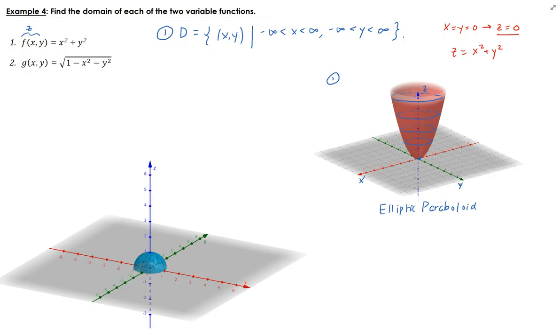For the second one, we have that z, again, this is just z, is equal to the square root of one minus x squared minus y squared. So there we have to be a little careful because we have a square root now.